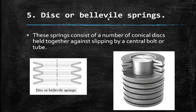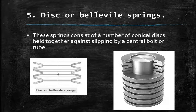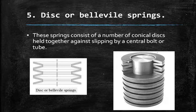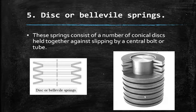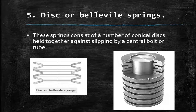Disc or Belleville springs consist of a number of conical discs held together against slipping by a central bolt or tube. The discs are placed one over the other in an opposite fashion and joined by the central bolt or tube. These are used for spring action in compression applications.